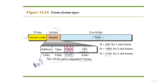The data or payload field consists of 0 to N bits, where N depends on whether a one-slot, three-slot, or five-slot frame is used. The maximum payload can go from 0 to 2740 bits. It contains data or control information coming from the upper layers.